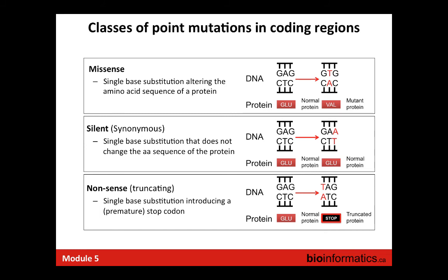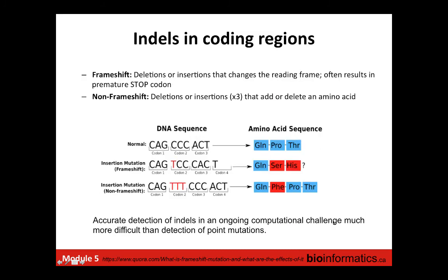Nonsense mutations are truncating—single base substitutions that introduce a premature stop codon. This is a classic mutation affecting tumor suppressor genes because truncating a protein halfway is a great way to inactivate it. For example, a change in the first position of a codon changes glutamine to a stop codon.